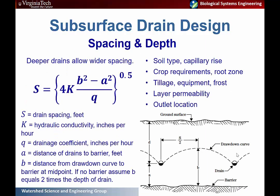This equation for drain spacing highlights the key variables: the hydraulic conductivity of the soil, your drainage coefficient, the distance between the drain and the impermeable barrier layer below, and the draw-down distance from the midpoint between drains — ensuring the water level is sufficiently low enough to not negatively impact the crops growing in that section.